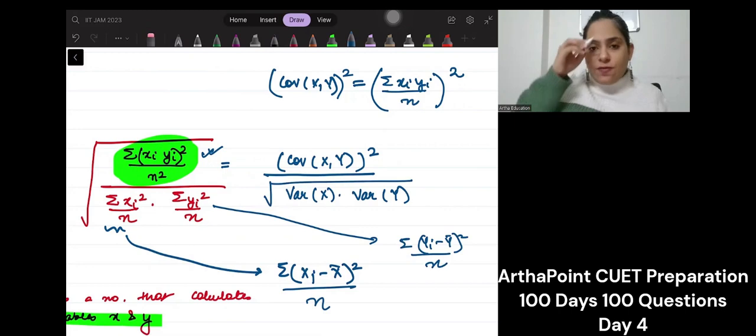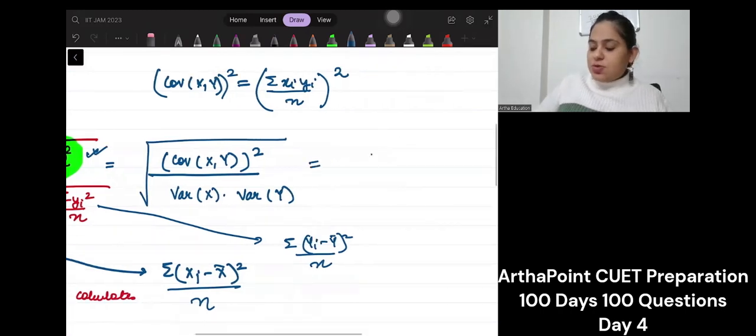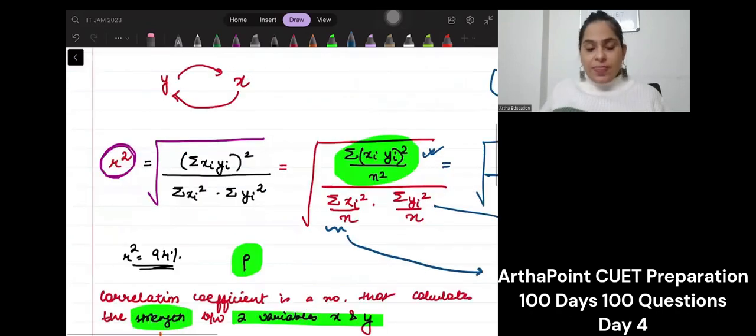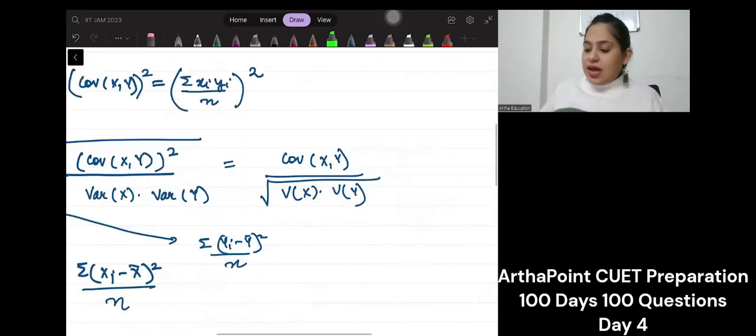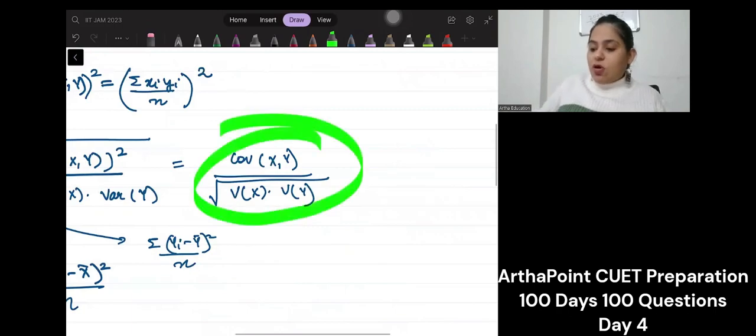So when you find the root of this, when you open this up, you will get covariance x, y divided by variance of x, variance of y under root. So you see, I started from the formula of r square. This is just for two variable regression. I started with the formula of r square and I was able to attain the formula of rho. We are clear with this much?